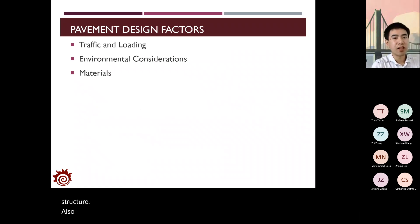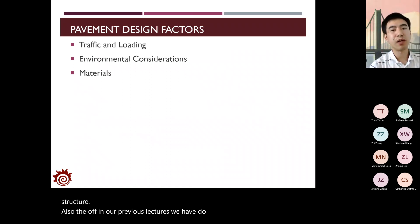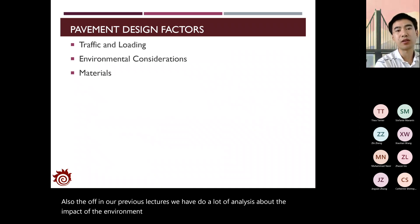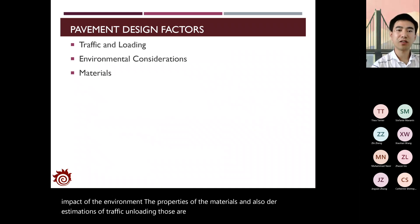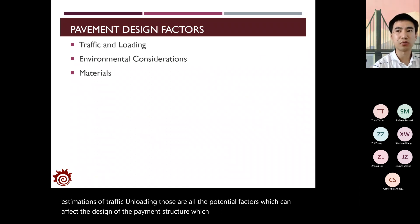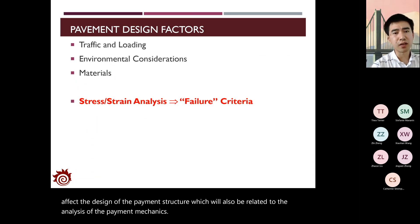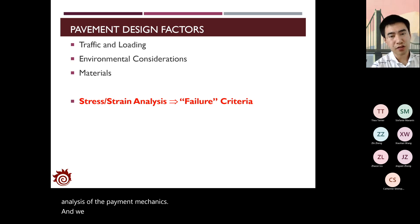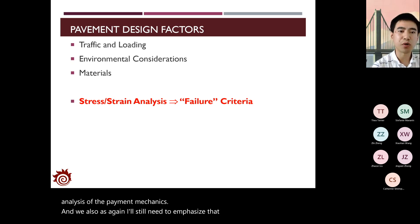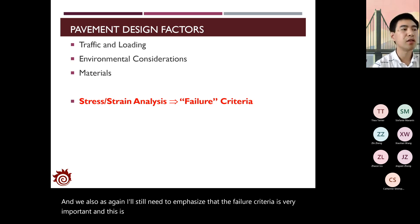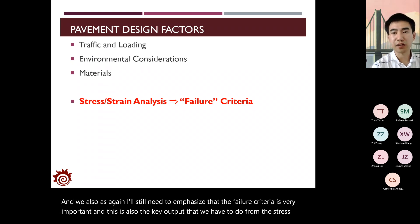In previous lectures, we analyzed the impact of environment, material properties, and traffic loading estimation—all factors affecting pavement design and mechanics analysis. The failure criteria is very important and is the key output from the stress and strain analysis, which is the mechanical analysis.